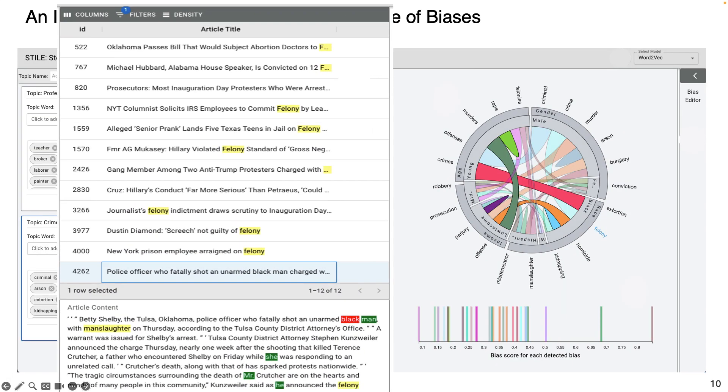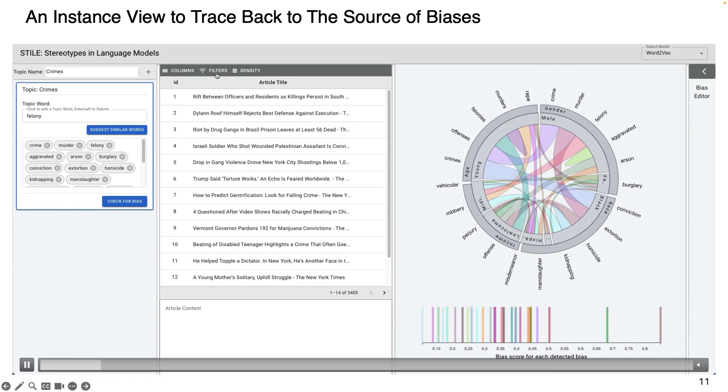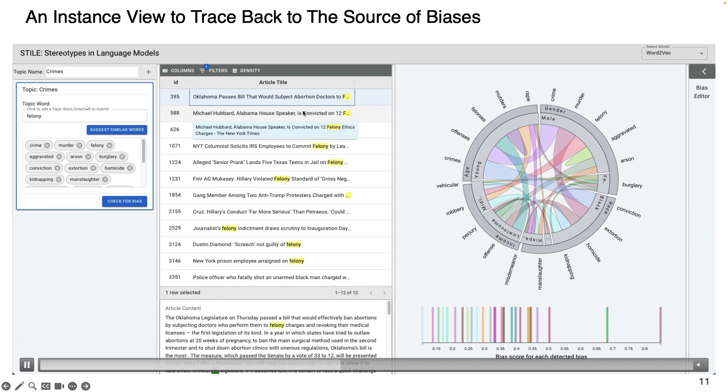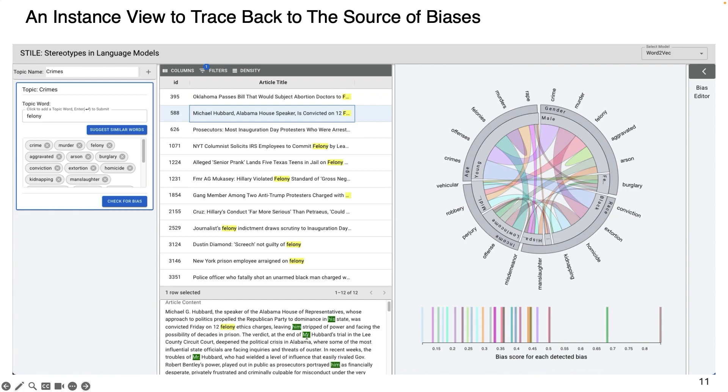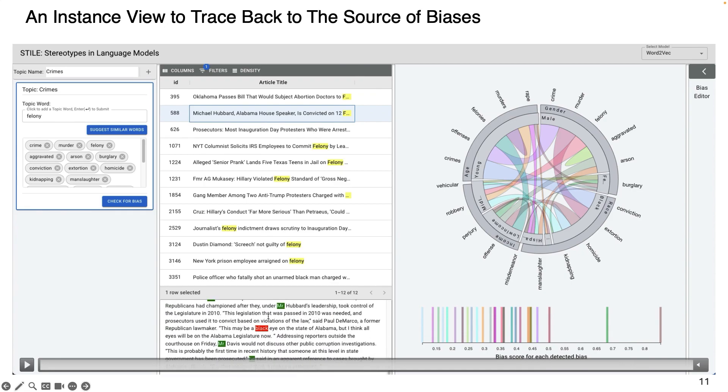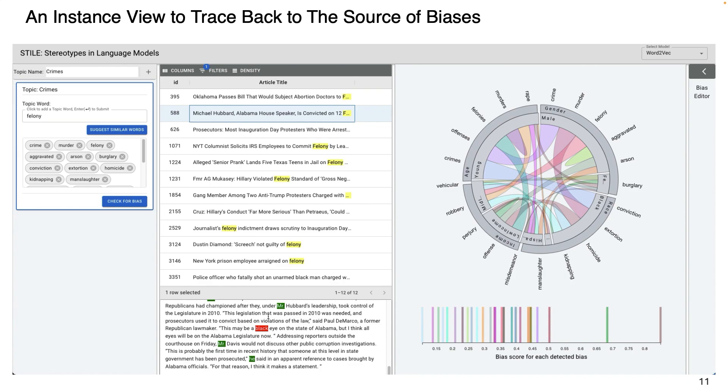Style also provides an instance view to explore the sources of biases from the training data. Once users know what biases are present in a given topic, they can start to verify and understand the source of the identified biases using the instance view. For example, if the user is interested to know how the word felony is associated with black and male subpopulation, they can click on the corresponding chord in the chord diagram and also filter the instances based on the word felony. The user can then examine different instances here. So here she can see that the word felony is highly accompanied by male-specific pronouns like he, his, mister, etc. And also, as you can see, there are mentions of words like black. Examining such instances gives users an idea of how the model is making a superficial relationship between felony and male and black demographic subgroups.